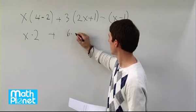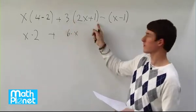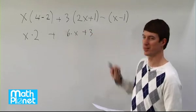So 3 times 2 is 6x, and then 3 times 1 is 3.